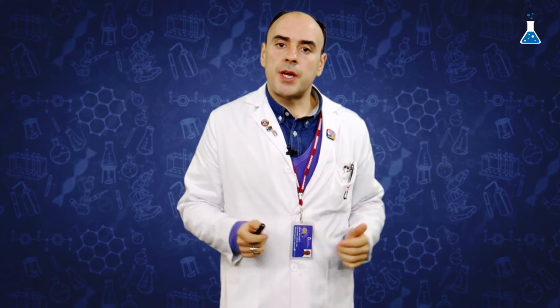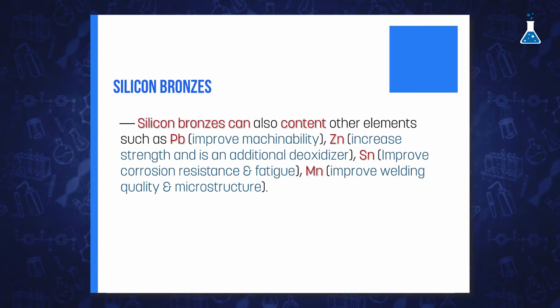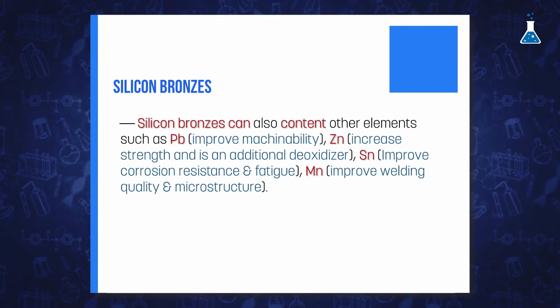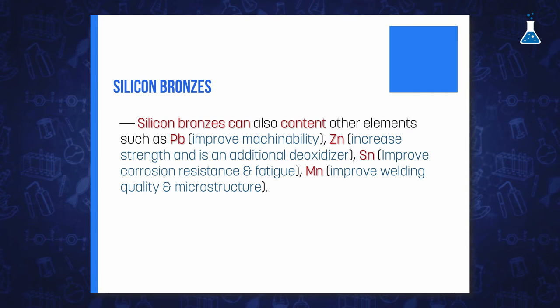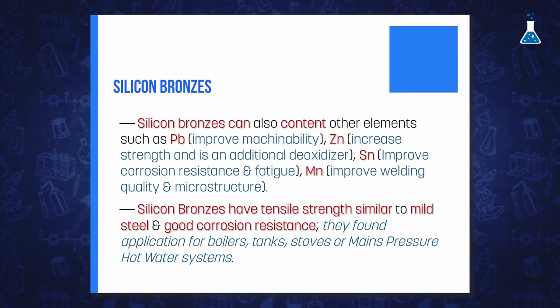Silicon bronzes can contain other elements such as lead to improve machinability, tin as a strengthener and additional deoxidizer, tin to improve corrosion resistance and fatigue strength, or manganese to improve welding quality. Other metals that can be found in silicon bronzes include chromium and nickel. Silicon bronzes possess tensile strength similar to that of mild steel.